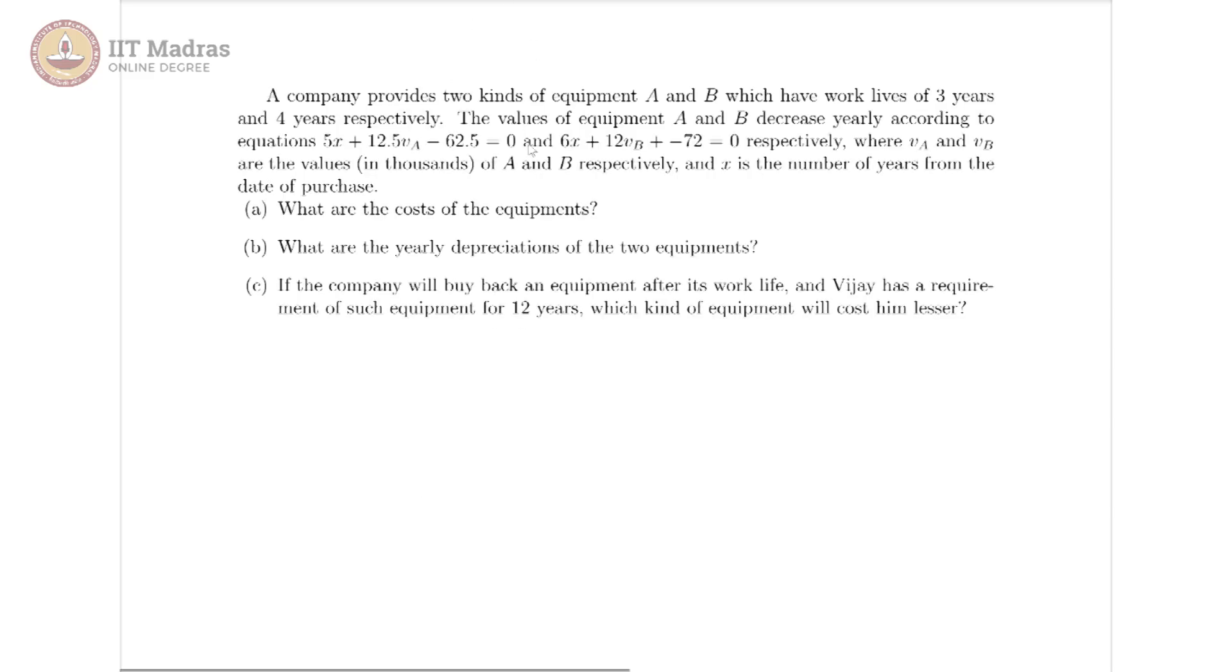two kinds of equipment A and B. They have work lives of three years and four years respectively, so work life of A is three, work life of B is four years. Further, the values of equipment A and B decrease yearly according to these equations.